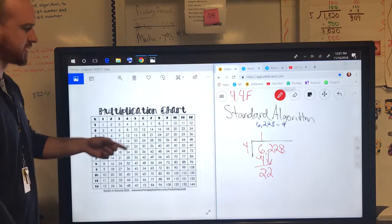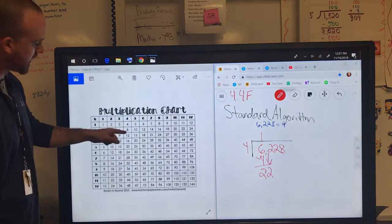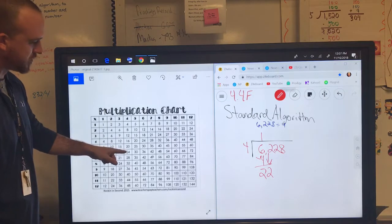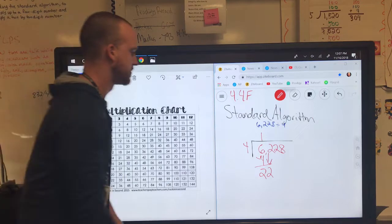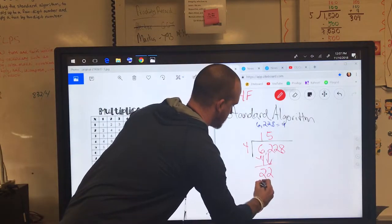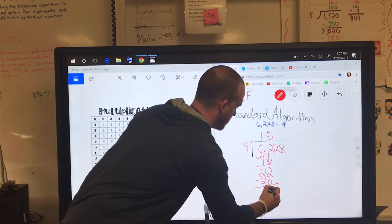I'm going to skip count by 4 again and get as close as I can. 4, 8, 12, 16, 20, well 24 is too much. So I go back up to the 20, I look and see what it was, that's 5. 4 times 5 is 20, so I subtract 20, and I get 2.